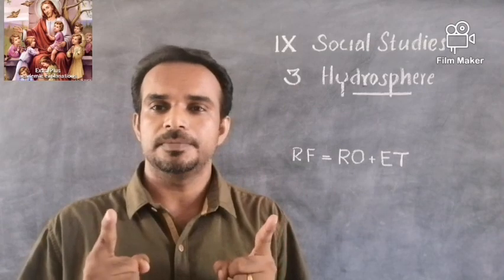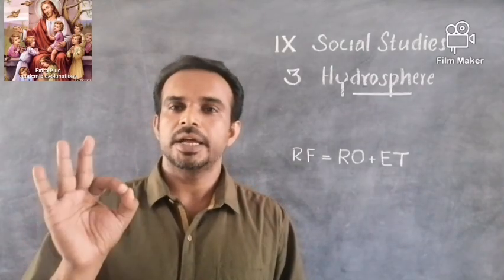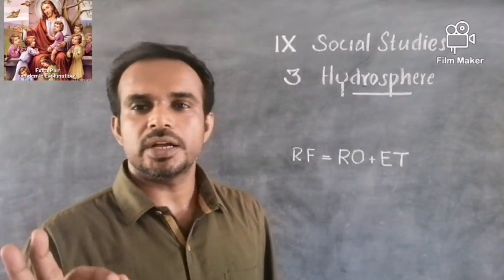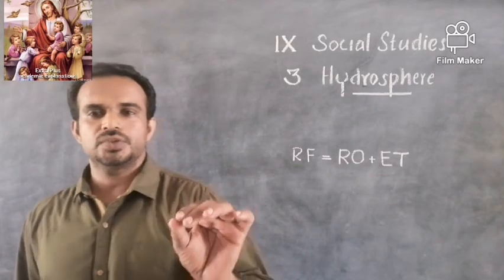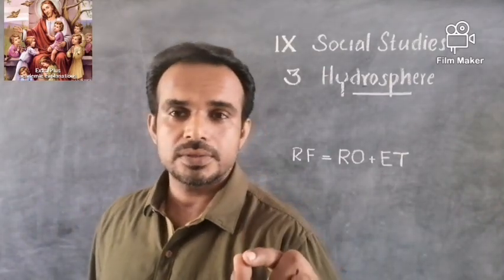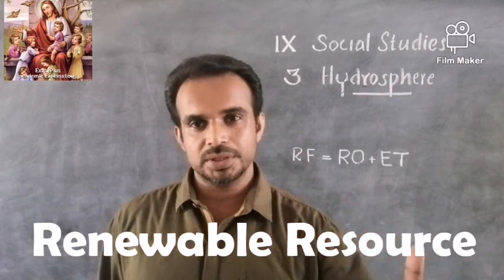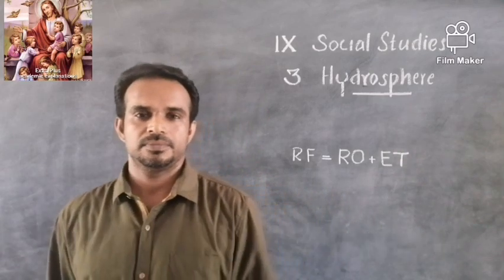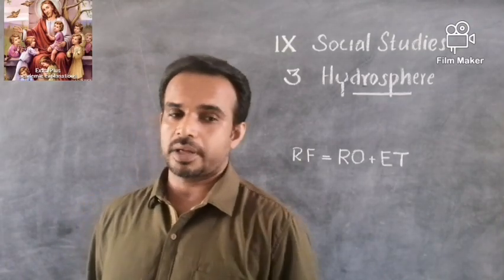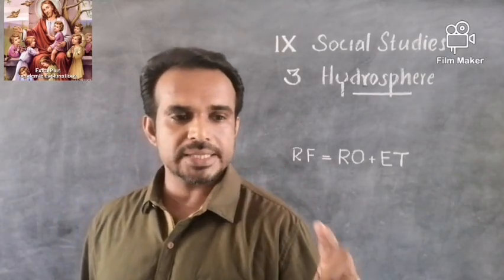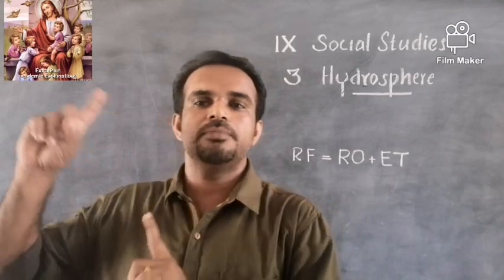Before discussing the hydrological cycle, why do we call it a cycle? A cycle is something that is rotating. Does water have a cyclic nature? Yes, water has a cyclic nature. The major specification of water is that it is a renewable and reusable resource — water can be used multiple times. It moves from oceans to the land and from the land back to oceans.